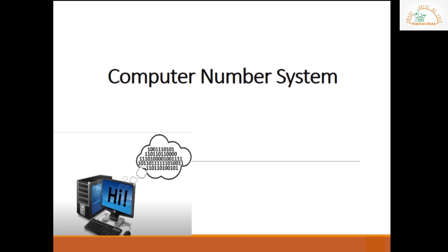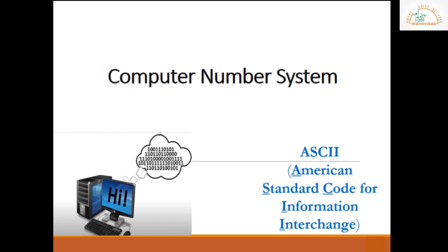ASCII means American Standard Code for Information Interchange, where each number, character, and symbol has a numerical equivalent. For example, character A has ASCII value 65 if it is an uppercase letter. If it is a lowercase letter, character A will have 97 as its ASCII value.